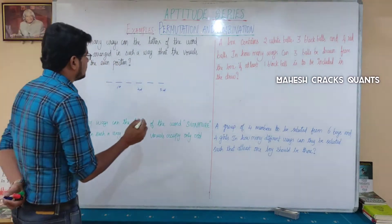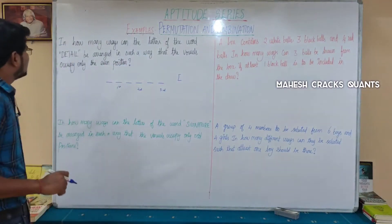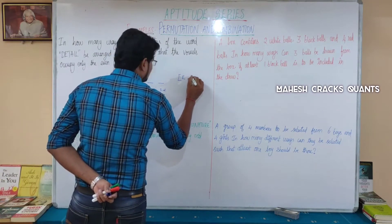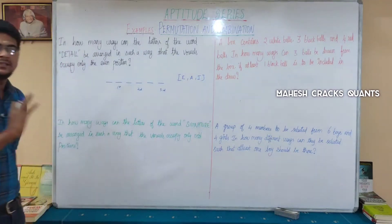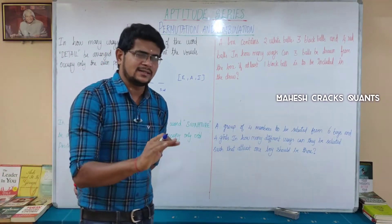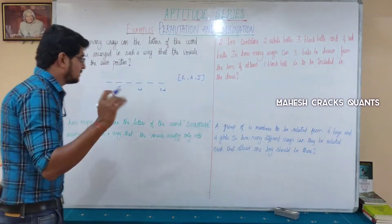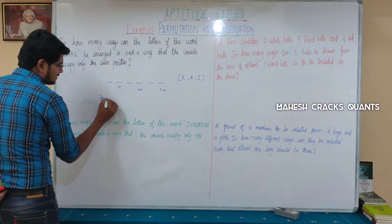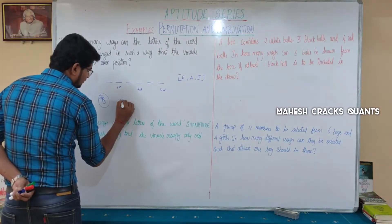How many vowels are there in DETAIL? E, A, and I — totally three vowels. There are three places and three letters. How many ways can we arrange them? Three factorial ways — that is, we use permutation: three factorial ways.